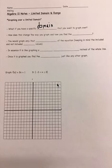What if you have a specific domain that you want to graph over? How does this change the way you graph and how you find the range? If you remember, domain is the x values and range is the y values.